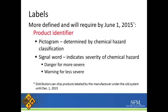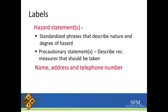The label must have a product identifier. It must have a pictogram, which is determined by a chemical hazard classification — we will go through the required pictograms in a moment. A signal word indicates the severity of the chemical hazard: 'Danger' means more severe, or 'Warning' for less severe. It must have a hazard statement — standardized phrases that describe the nature and degree of the hazard. It must have a precautionary statement describing the recommended measures to protect yourself. It must also have the name, address, and telephone number of the manufacturer.